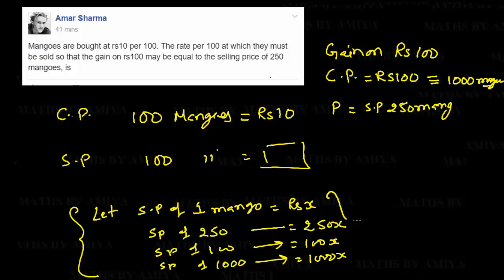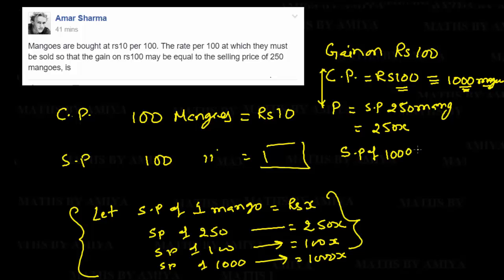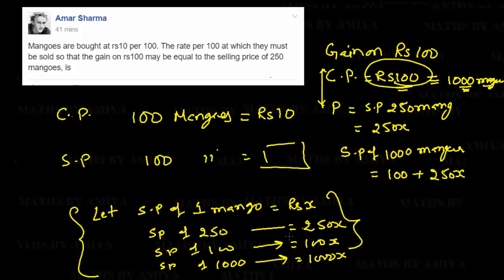Now we have everything in selling price terms. Cost price of 1000 mangoes is Rs.100, and the profit equals the selling price of 250 mangoes. Selling price equals cost price plus profit. So the selling price of 1000 mangoes equals cost price plus profit, where profit is the selling price of 250 mangoes. We are working at Rs.100 as cost price for 1000 mangoes, and at 1000 mangoes we get the selling price of 250 mangoes.